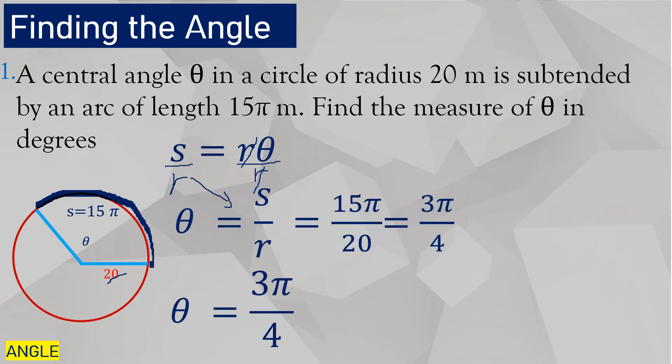Now, you see here that the arc length S is 15 pi, so substitute. The radius is 20 meters, so substitute again. Now 15 divided by 20 is 3 fourths, times pi, so 3 pi over 4.